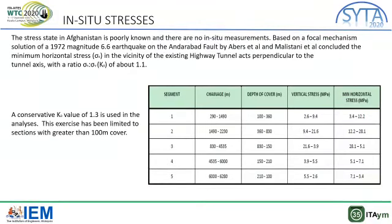Talking about the in-situ stress conditions, this area does not have good records of in-situ stress states and there are no particular measurements of stresses. Based on previous earthquake records, we have derived some in-situ parameters from the horizontal and vertical stresses, which come to around 1.1 to 1.2. We have conservatively taken a higher value of 1.3 for our analysis, and the table shows the distribution of stresses — majorly 1.2 to 1.3.